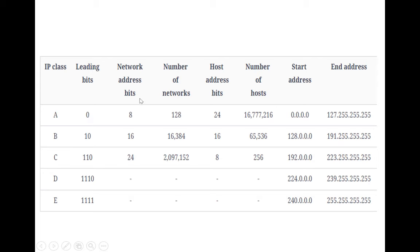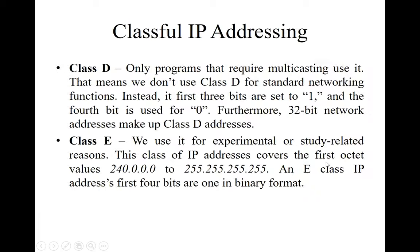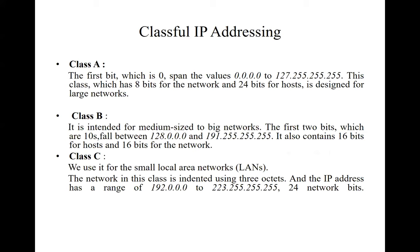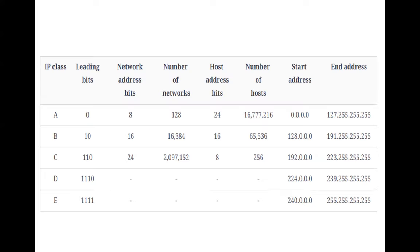This chart describes the various IP classes, their leading bits, address bits, number of possible hosts, and starting and ending addresses. As discussed, an address starting from 0 to 127 belongs to Class A, 128 to 191 belongs to Class B, and 192 to 223 belongs to Class C. Based on usage, the NIC will provide the appropriate class needed for an organization.